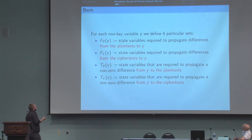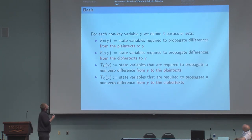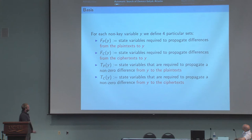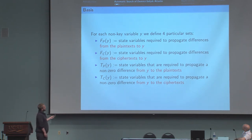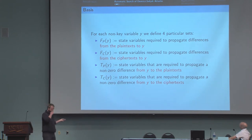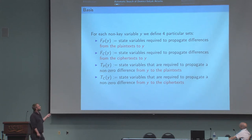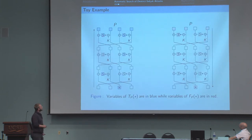We defined for each non-key variable Y four sets: FP, FC, TP, and TC, containing respectively the state variables required to propagate differences from the plaintext to Y, from the ciphertext to Y, from Y to the plaintext, and from Y to the ciphertext. To compute those sets, we just do some linear algebra on the system of equations given to the tool.